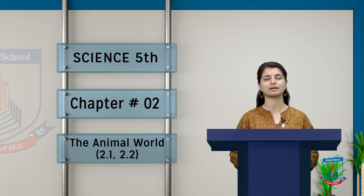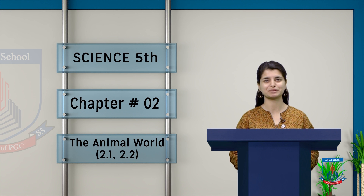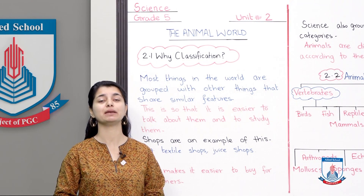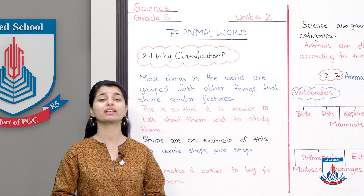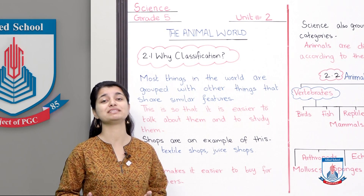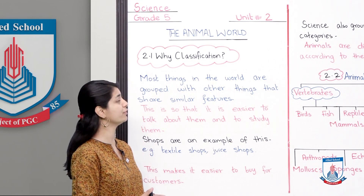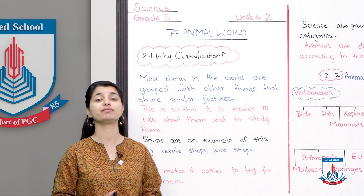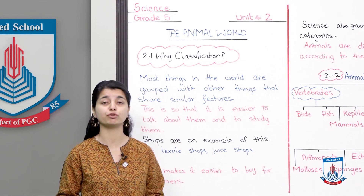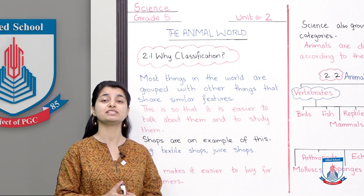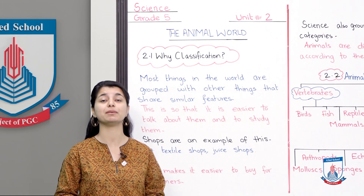Assalamualaikum Grade 5, I'm your science teacher Sabah and we're about to start Chapter 2: The Animal Kingdom. We'll talk about animals from different types, their classifications, their cells, how they function, how they act, and how they are different from non-animals like plants. We'll classify animals and talk about their different features. Our first unit is Unit 2.1: Animal Classification.